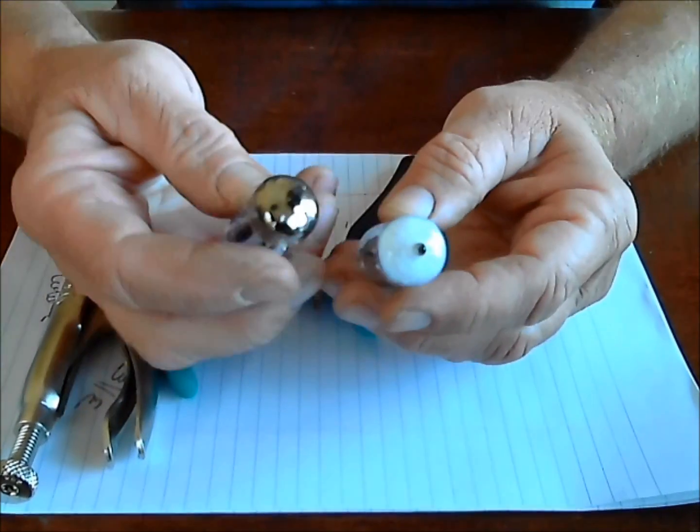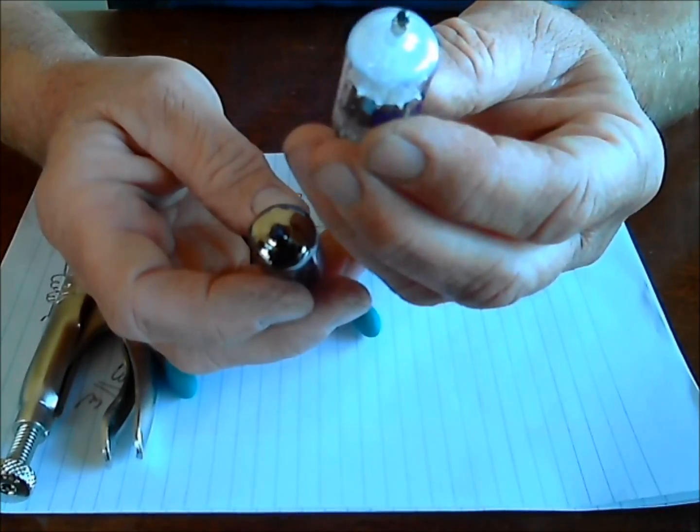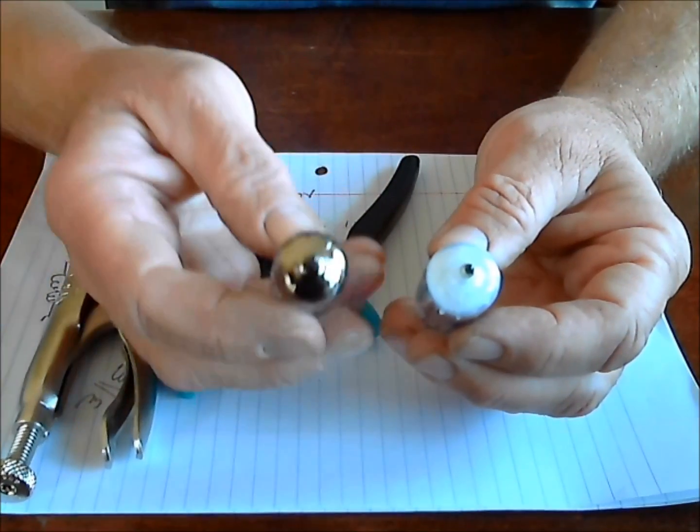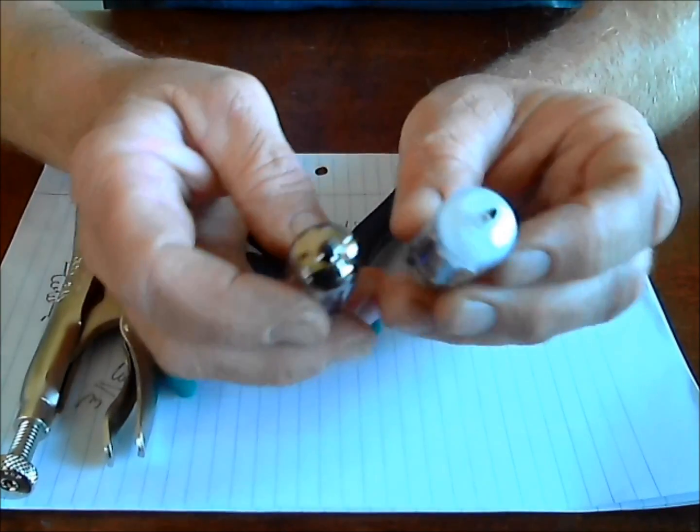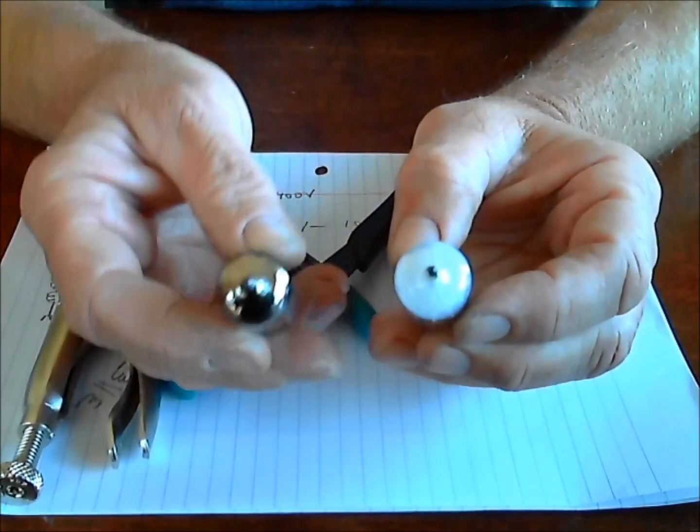Before I do that, let me give you a couple of eBay tips. This is a bad 12AX7. This is a good 12AX7. What went bad on this 12AX7, as you see, the top is all white as opposed to this one being silver.